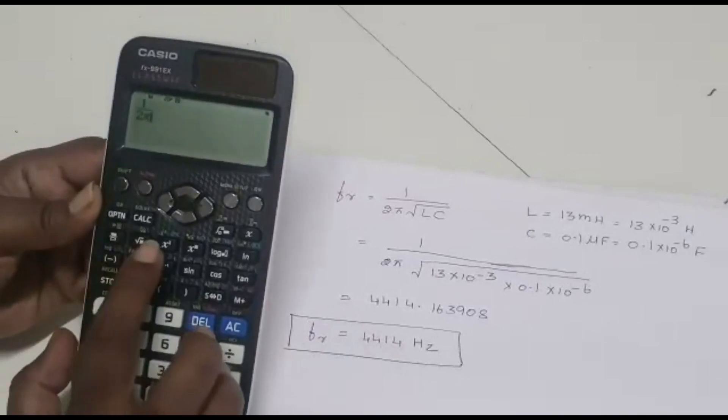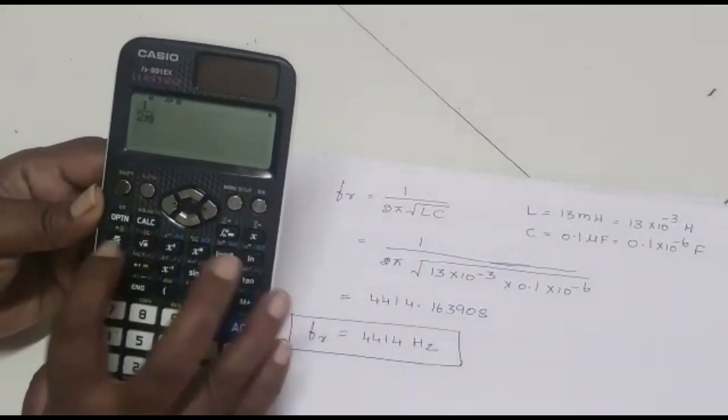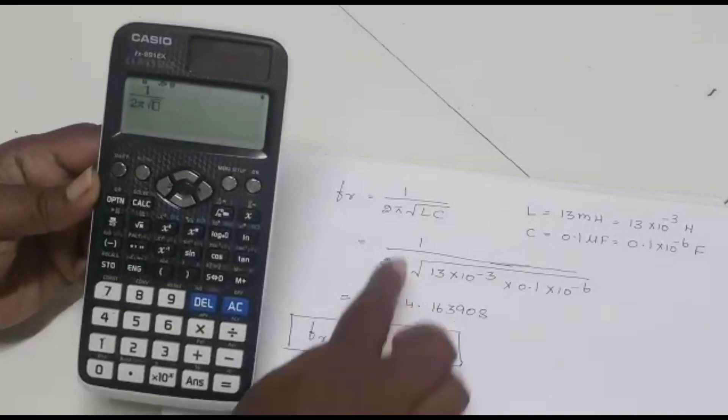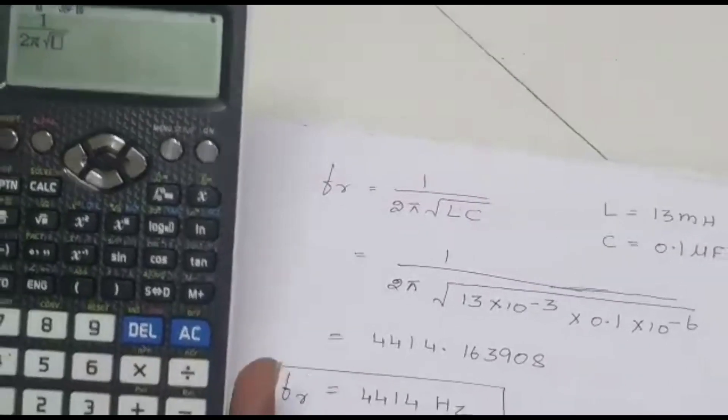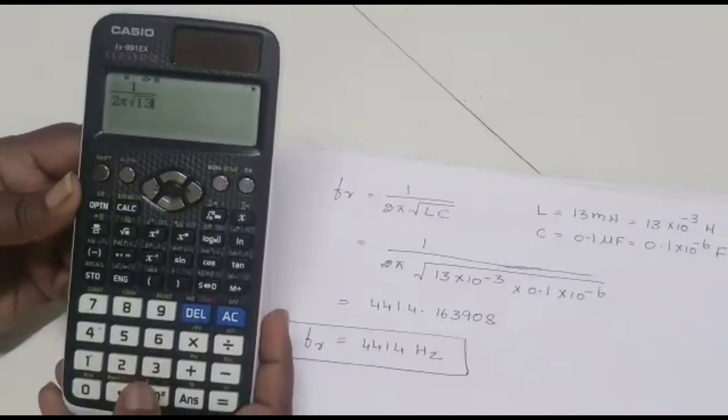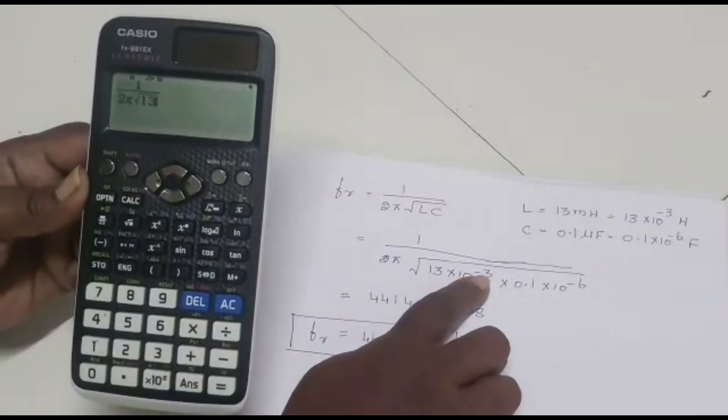And then root. Now root, we have to press. This is the second button, the root button. Press it. And then see here, L value. L is 13, into 10 power minus 3.